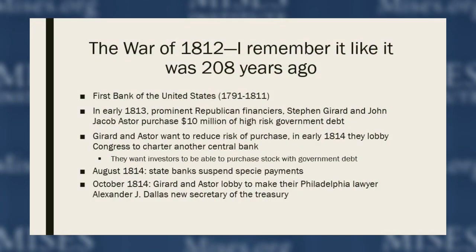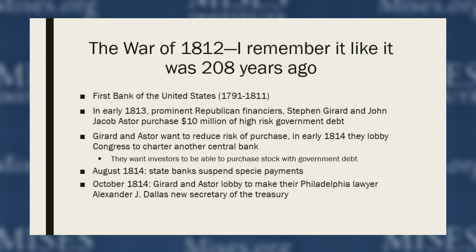We first have to start with the War of 1812. Before the Second Bank of the United States, we originally had a central bank — the First Bank of the United States, which Alexander Hamilton was very prominent in pushing for. It had a 20-year charter that was not renewed. In early 1813, the government needed to borrow money and simply monetized the debt. Very prominent Republican financiers Stephen Gerard and John Jacob Astor purchased about $10 million of a $16 million loan — very high-risk government debt, given the uncertainty over the war's outcome.